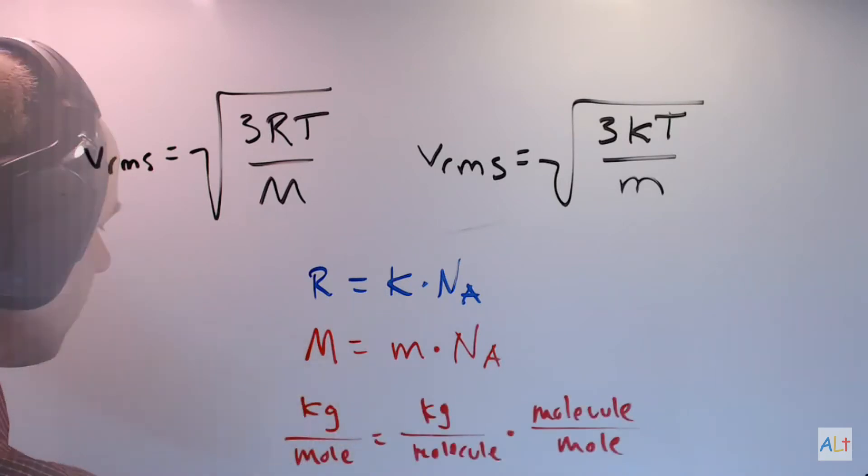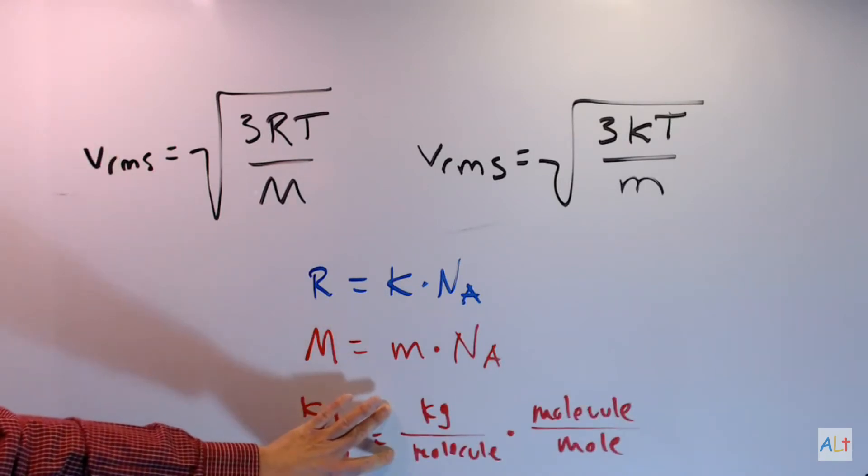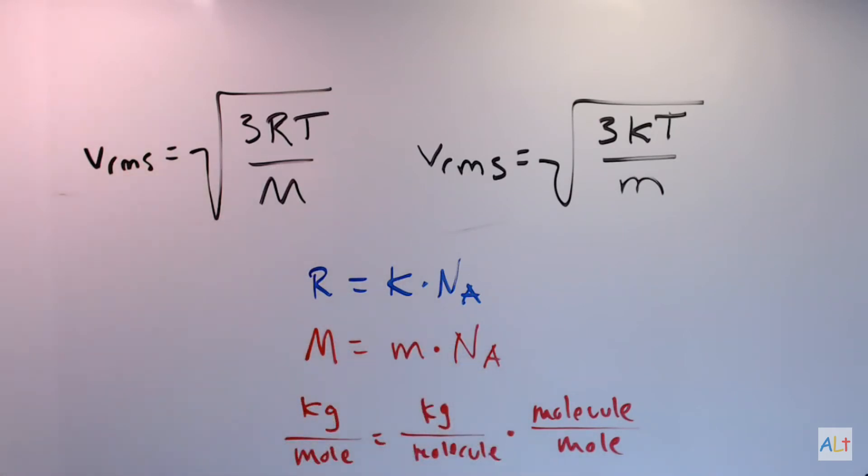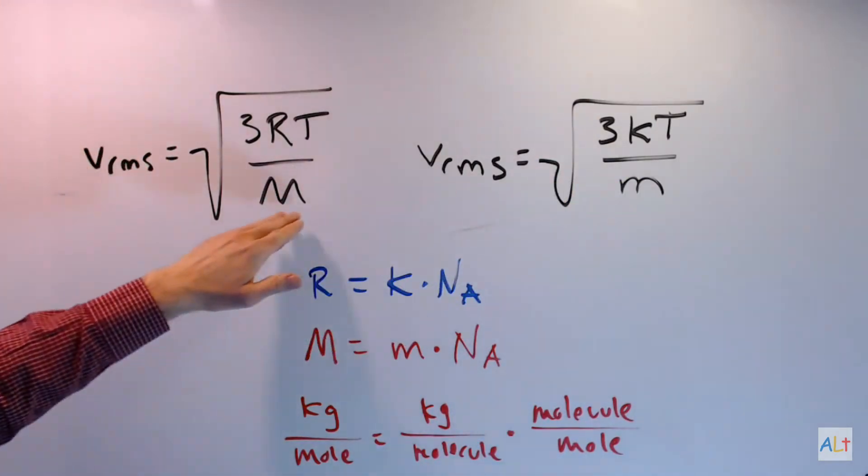And just to make that crystal clear, these are the units: kilograms per mole, kilograms per molecule, and of course Avogadro's number is molecules per mole. So if you know what one of these is, it's easy enough to convert and find the other.